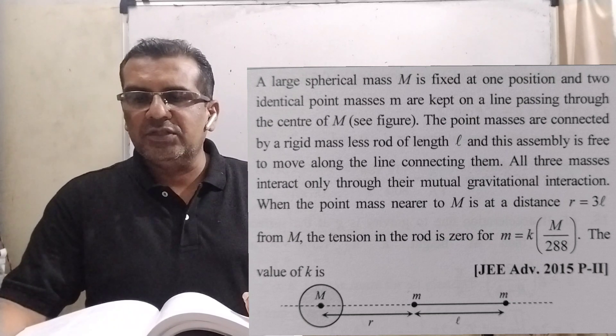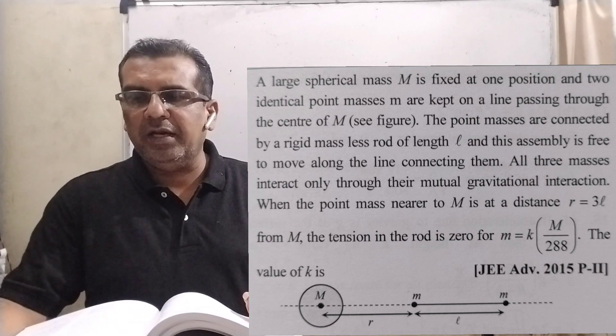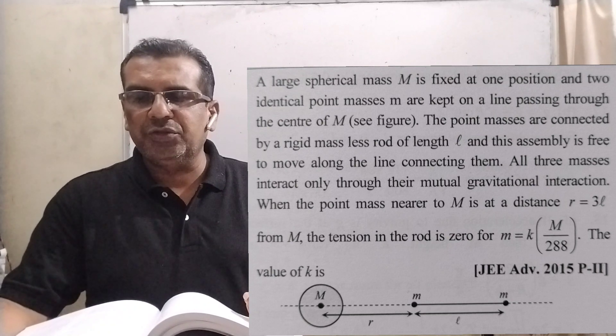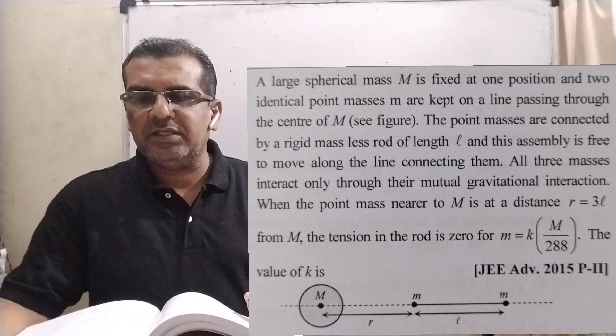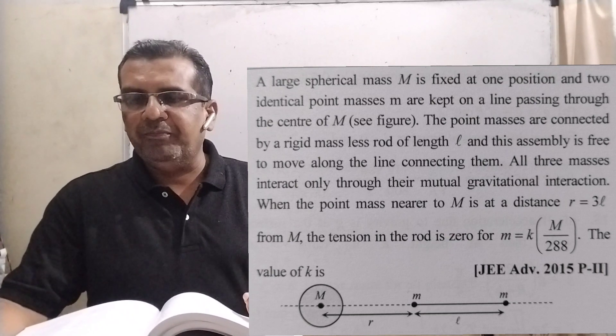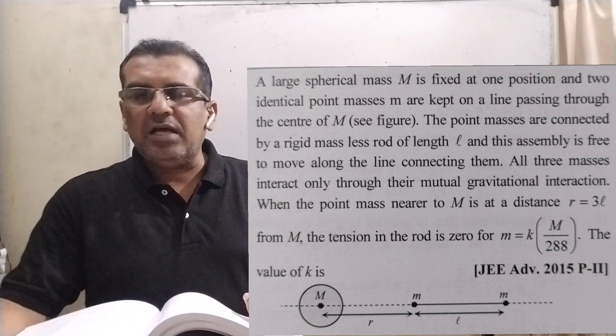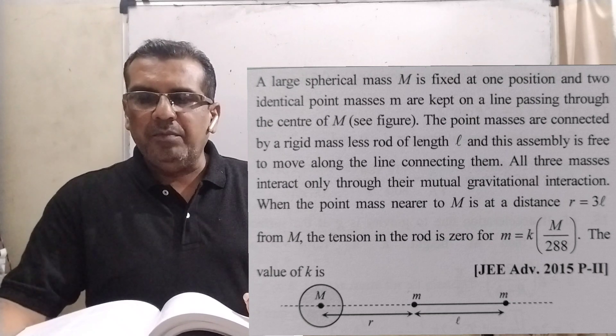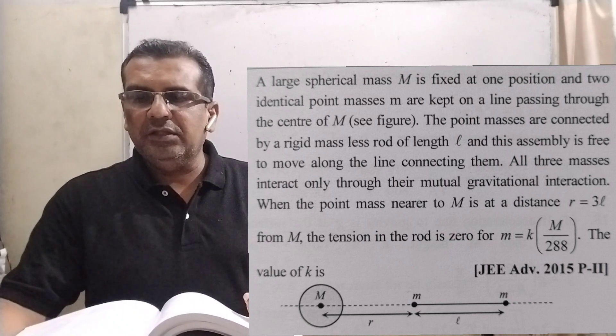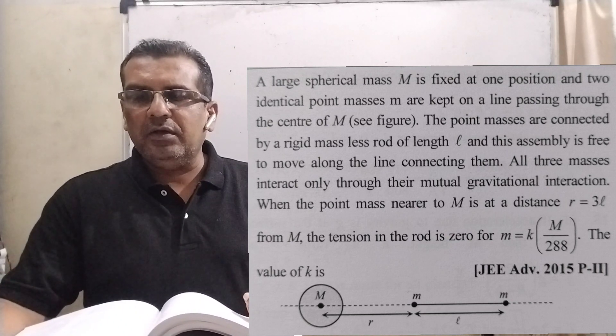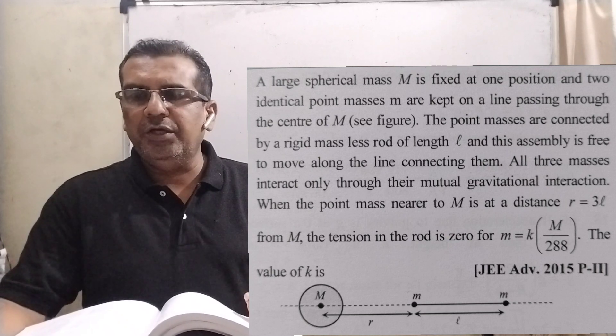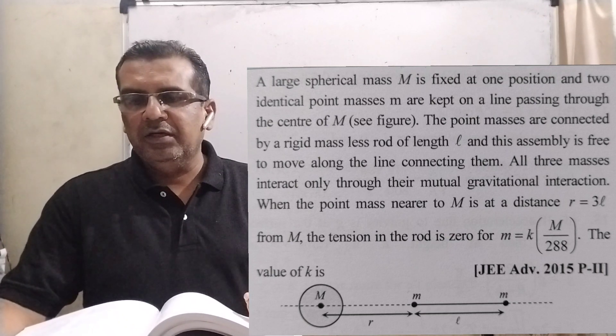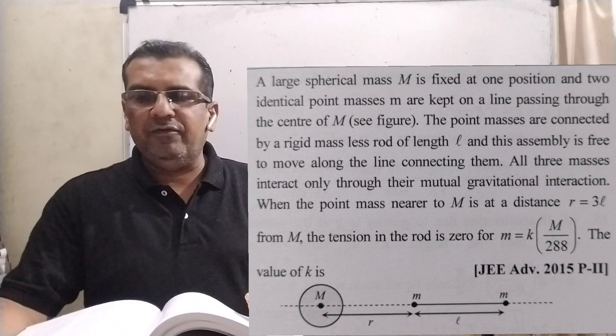And this assembly is free to move along the line connecting them. All three masses interact only through their mutual gravitational interaction. When the point mass nearer to capital M is at a distance r equal to 3L from capital M, the tension in the rod is zero for M equal to K times capital M divided by 288. Then find the value of K.